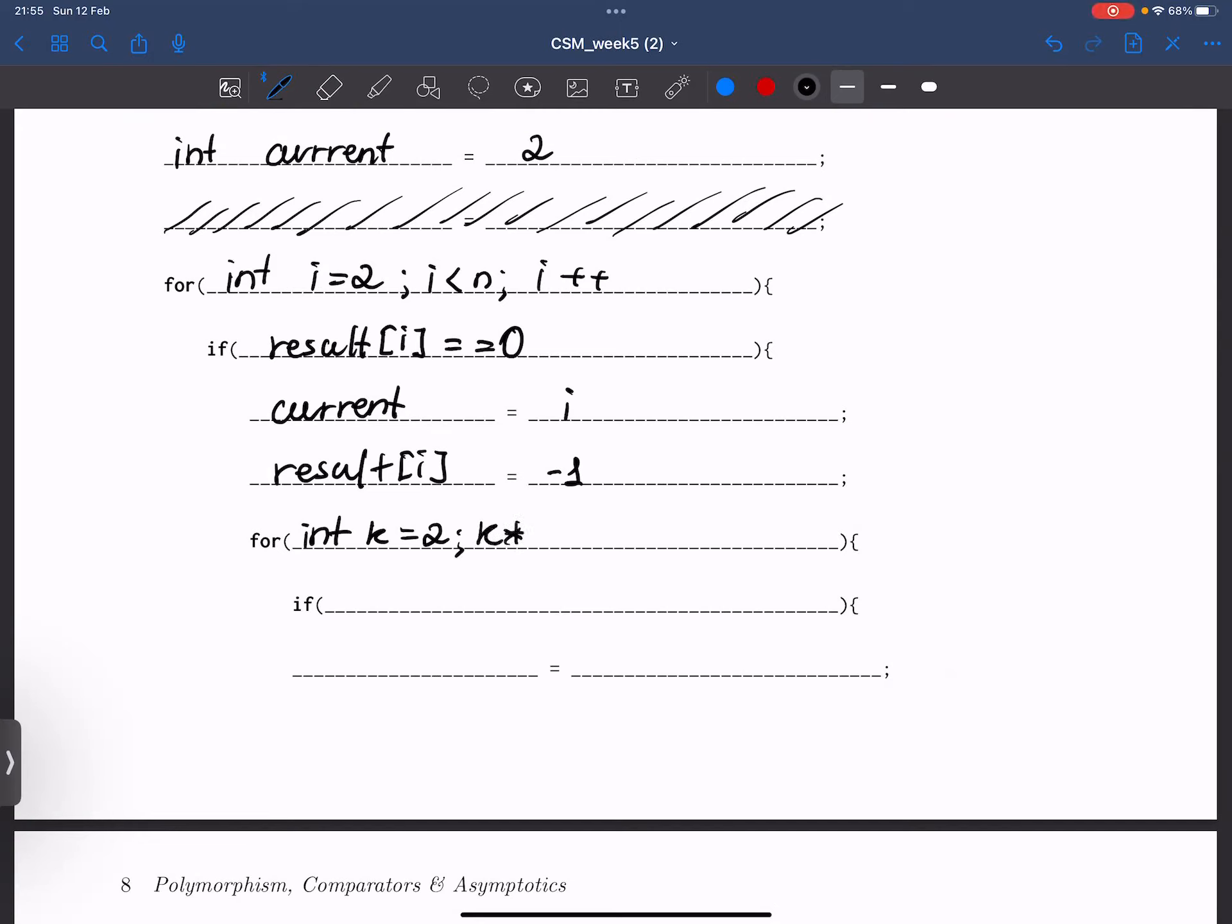And we can do so by using this call. I hope that it makes sense because here, essentially, the first number that we eliminate is going to be k multiplied by current. So actually, we can write it down this way: 2 currents, 3 currents, 4 currents, etc. And you may ask yourself, what about 1 multiplied by current? What about the element at this index? But we already covered it here.